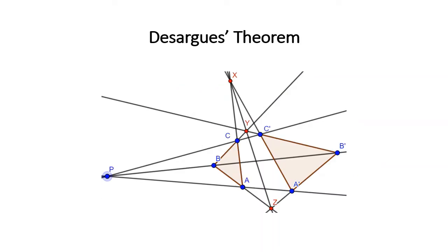The Desargues theorem states: suppose we have the triangle ABC and the triangle A'B'C' and they are in perspective from the point P. If the corresponding sides of each triangle intersect — like the line AC meets the line A'C' at point X, the line BC meets the line B'C' at point Y, and lastly the line BA meets the line B'A' at point Z — then the three points of intersection X, Y, and Z are collinear.